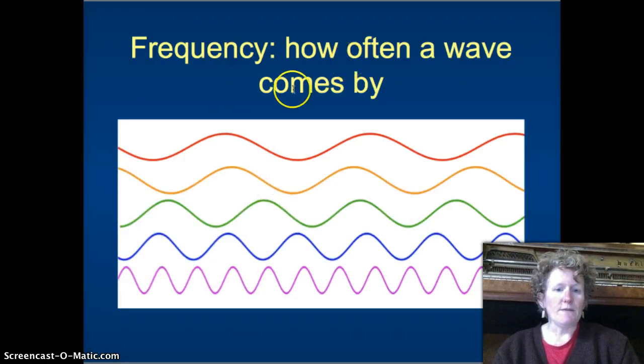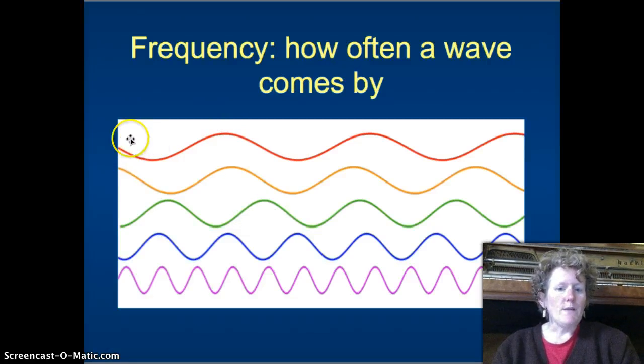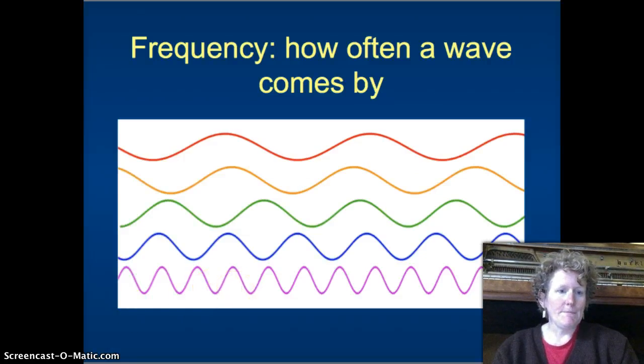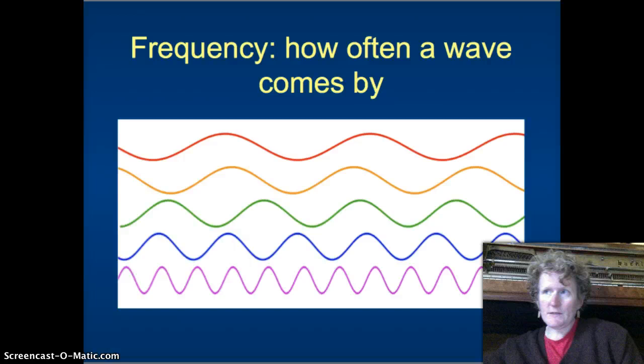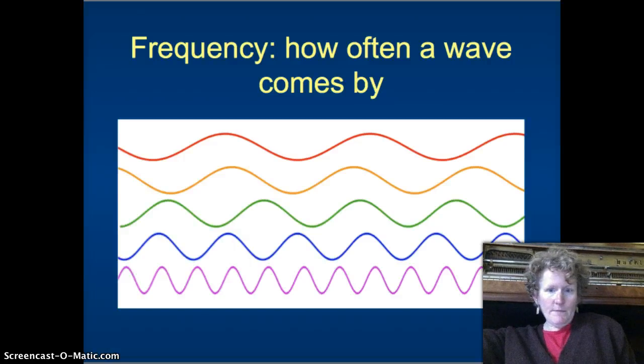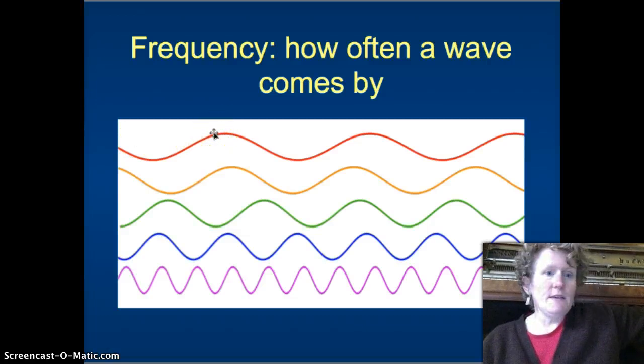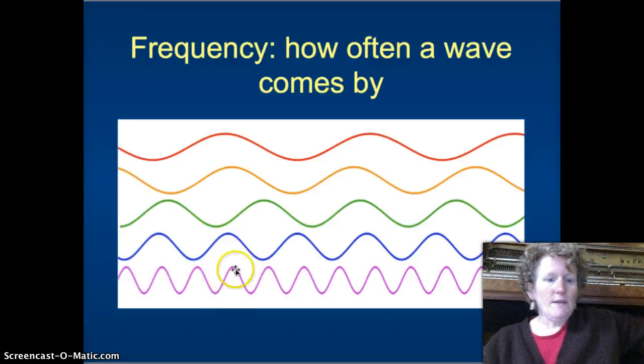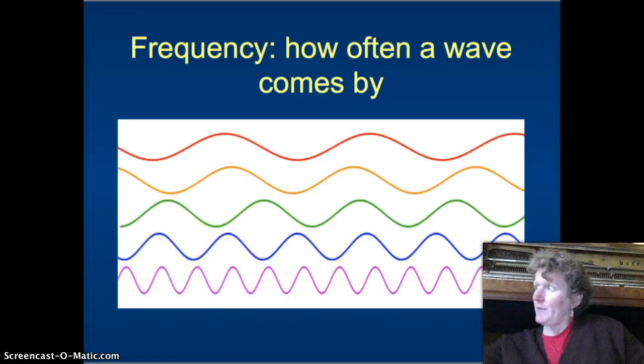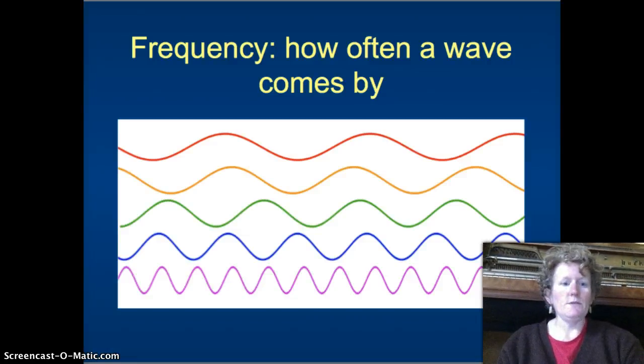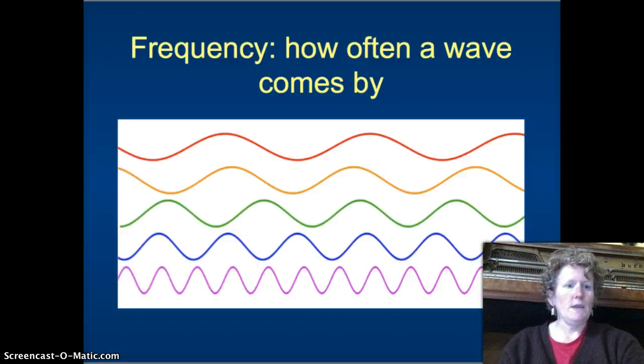Frequency is how often waves come by. So if we were watching, say, on the beach, we were watching waves come by here, the frequency of this red wave here would be different than, say, the frequency of this purple wave. And if you want to know what that sounds like, this end of the keyboard would kind of look more like this. This end of the keyboard would look more like this. Because the energy created by these two different strings that the piano is using to create the sound is different.